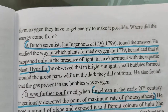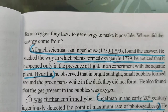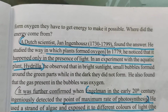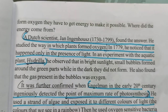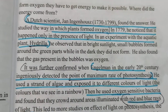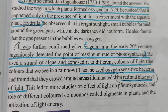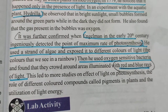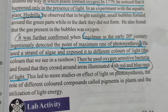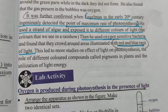A Dutch scientist, Jan Ingenhousz, found the answer regarding how oxygen is evolved from the plant. In 1779, he noticed that it happened only in the presence of light. In an experiment with the aquatic plant hydrilla, in the early 20th century, he detected the point of maximum rate of photosynthesis. He used strands of algae exposed to different colors of light and found that red and blue rays gave the maximum rate of photosynthesis.